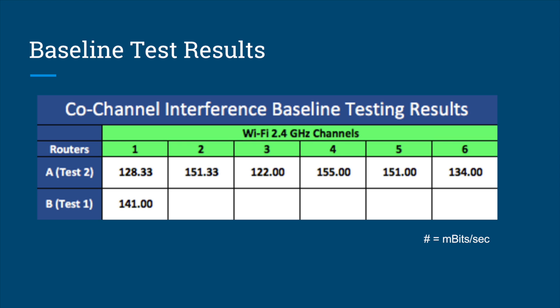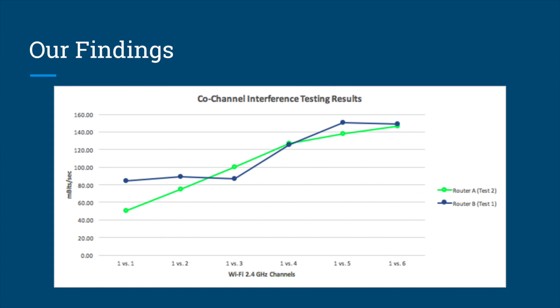Our baseline tests showed that each channel experienced high throughput, with all channels averaging between 128 and 155 Mbps. After our baseline tests, we began testing for co-channel interference. We found that when the routers were on channels 1 and 6, their throughput was 149 Mbps for channel 1 and 146 Mbps for channel 6.